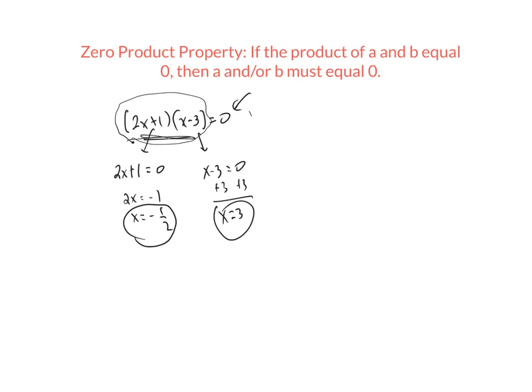And that's the basis of solving quadratic equations by factoring. Just remember, though, that in order to use the zero product property, the product, the factored thing, has to equal zero. It can't equal any other number.